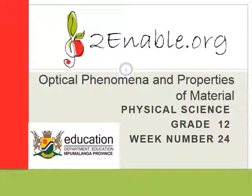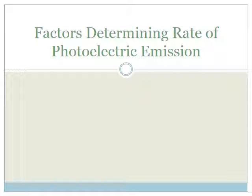Good day. Welcome to this final lesson on optical phenomena and properties of material in week 24. We're still looking at photoelectric emission. In the last lesson, we looked at factors that determined whether or not photoelectric emission would occur. In this lesson, we're looking at factors that determine the rate of the photoelectric emission.